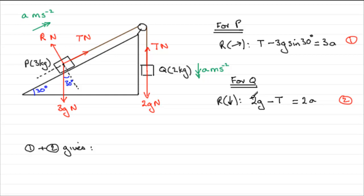So we've just got the 2G added to the minus 3G sine 30. So let's just write that down. 2G minus the 3G sine 30 degrees. And that's going to equal 3A plus 2A. In other words 5A.